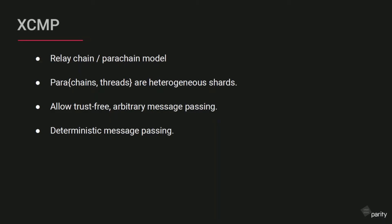The next thing is XCMP — cross-chain message passing. We recently renamed this from ICMP. To put some context around this: our relay chain and parachain model allows these chains to interact with each other. These are basically heterogeneous shards — they all have their own state transition logic — and you want to be able to send messages across these shards. The question is: how do we allow trust-free arbitrary message passing?